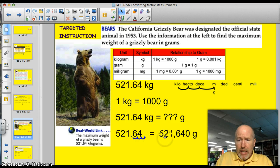Put that in. And then I do have to add a zero as a placeholder. But I found out that 521.64 kilograms is actually 521,640 grams.